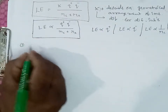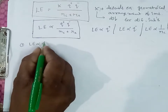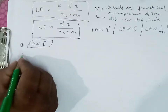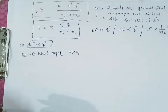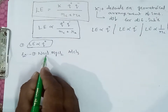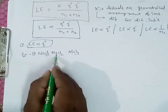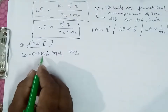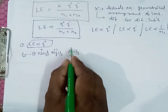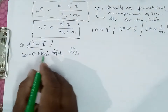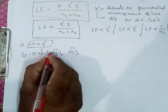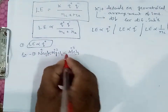Now we'll examine each relation. First, lattice energy is directly proportional to the charge on the cation. For example, taking ionic substances with a common anion but different cations: the charge on sodium ion is +1, magnesium ion is +2, and aluminium ion is +3. When the charge increases, lattice energy also increases, so the increasing order of lattice energy follows NaF < MgO < AlN.